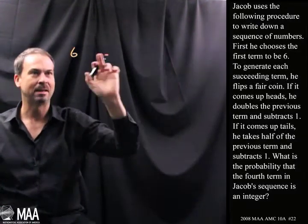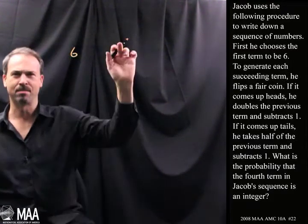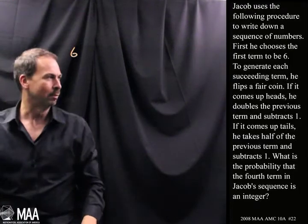And if it comes up heads, he apparently doubles the number and subtracts 1 to get the next term. And if it comes up tails, what does he do? He halves the number and then subtracts 1.